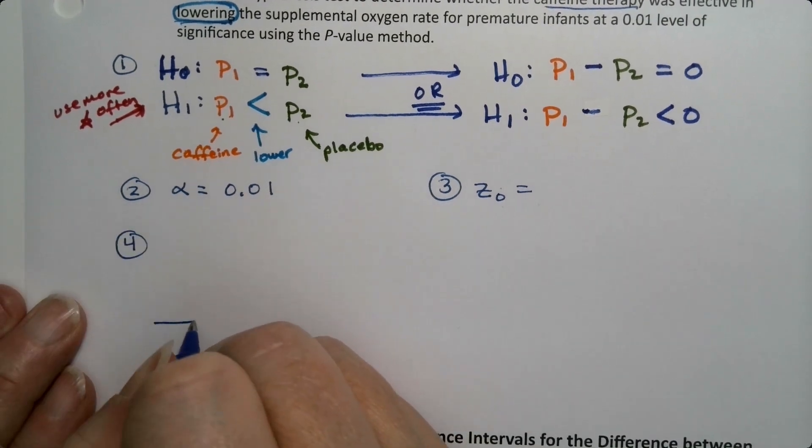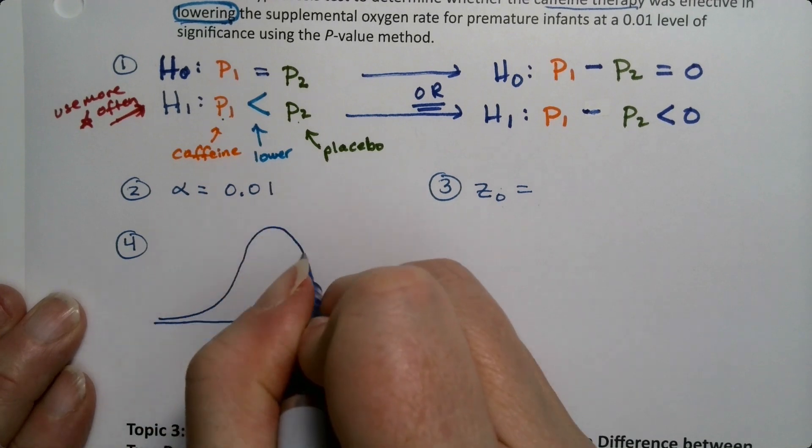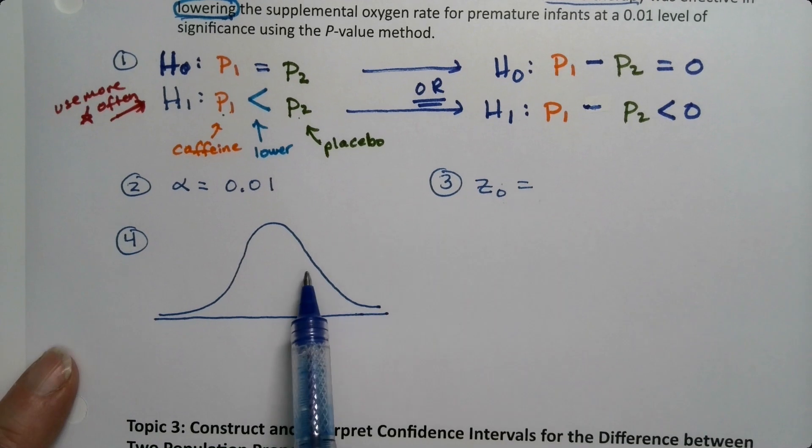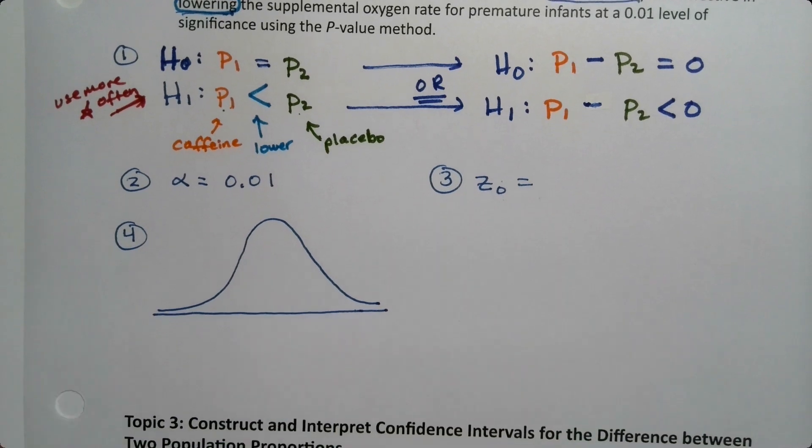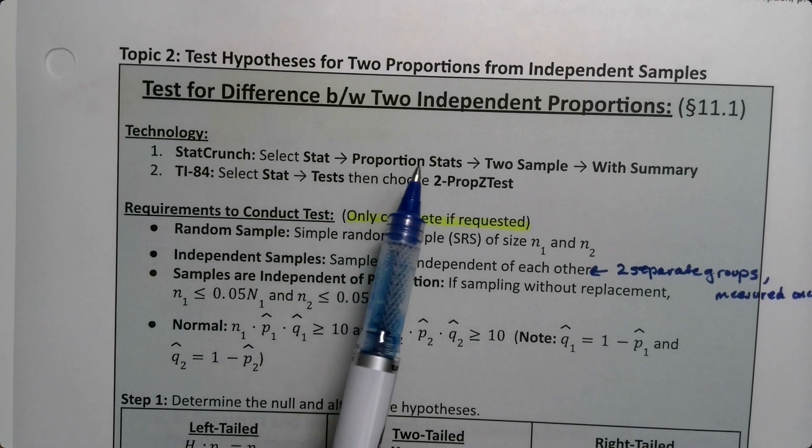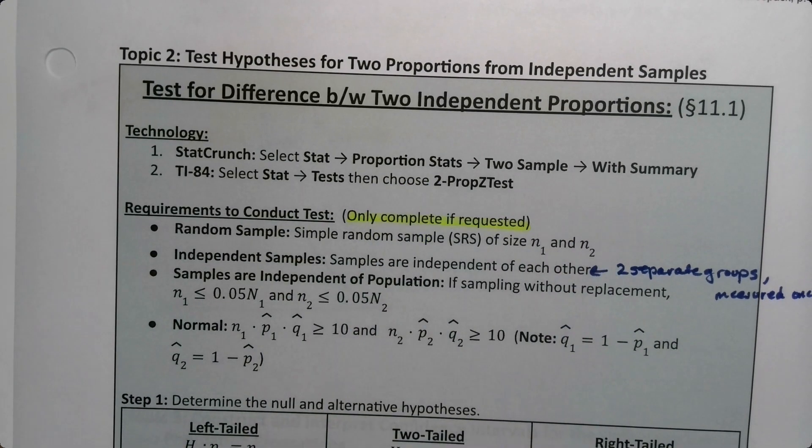For the record, for step four I'm going to draw my little normal curve and StatCrunch will give us that also. So steps three and four we want to get from StatCrunch. StatCrunch instructions are right here at the top - it tells us to go to Stat, Proportion, Stat, Two Sample with Summary.